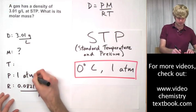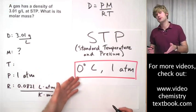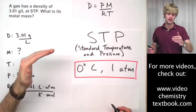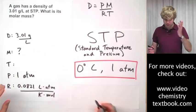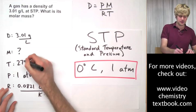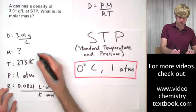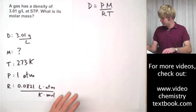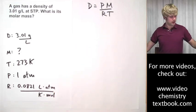So we can go ahead and plug these right into our variables. Pressure one ATM. Temperature is zero degrees Celsius, which we can't use because it's Celsius. We add 273 to that to get Kelvin. So zero plus 273 is going to be 273 Kelvin. Here are all of our variables laid out and we're ready to go to work.